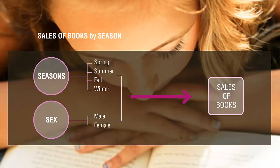Now, it becomes a bit more complex. Perhaps the gender difference influences the likelihood to read books. So, as the independent variables, both the season and the sex can be considered. Here, you have two independent variables and one dependent variable.